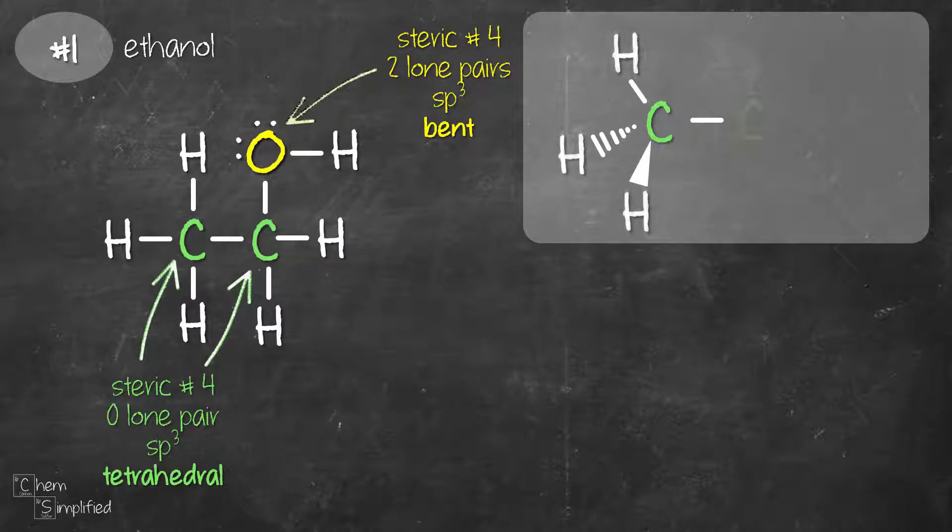Now we're going to add in the atoms. Since the second carbon also has tetrahedral shape, we're going to add in the second solid line followed by the two wedges. Again, two solid lines right next to each other and then two wedges right next to each other. That's tetrahedral. Now we're going to add in the atoms.